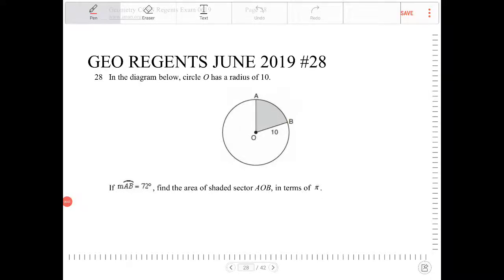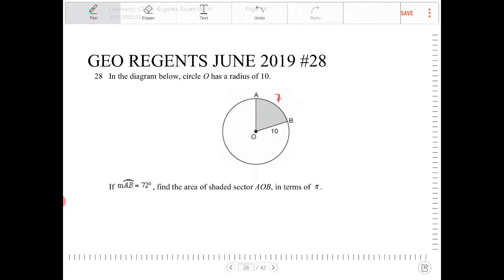In the diagram below, circle O has a radius of 10. If measure of arc AB is equal to 72 degrees, find the area of shaded sector AOB in terms of pi.